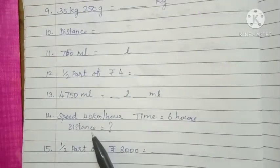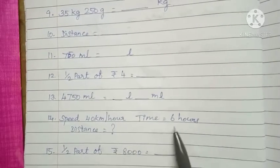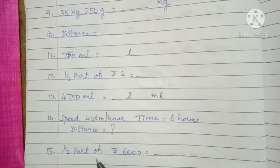Then 14th one: speed 40 kilometers per hour, time is 6 hours, find out the distance. 15th one: one-half part equal to 8000 rupees.